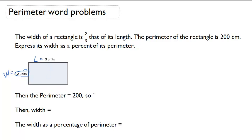Now, the perimeter is 200, so that means two units plus three units plus another two for the other width plus another three for the other length has to equal 200. I'm going to get ten units equals 200.